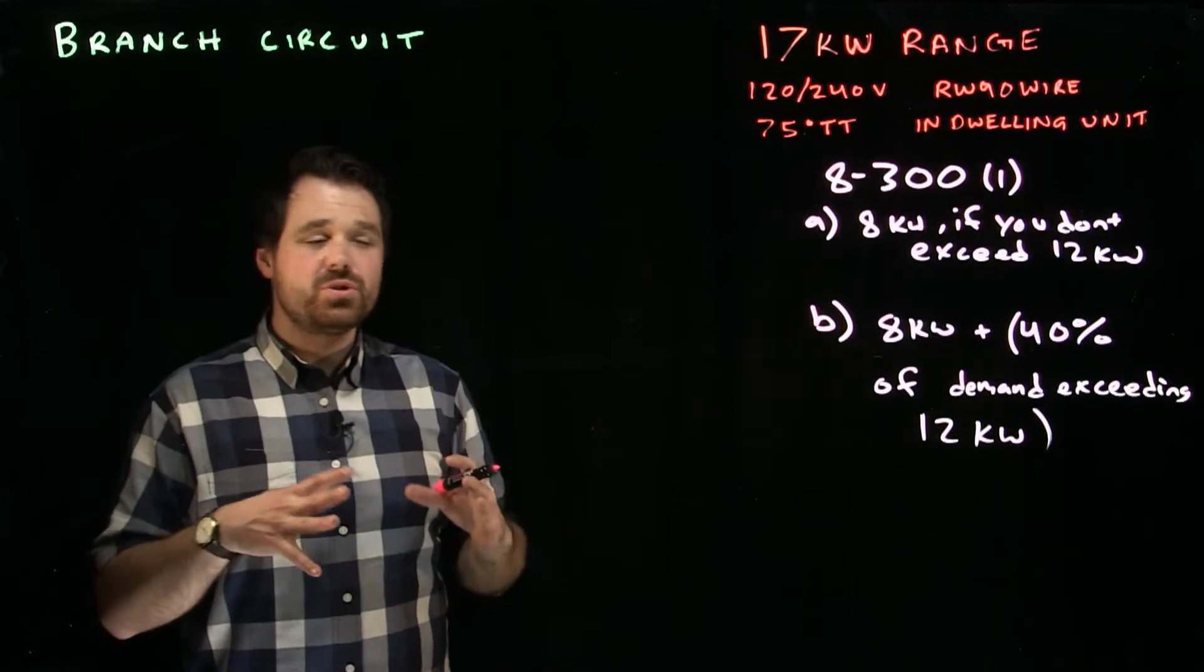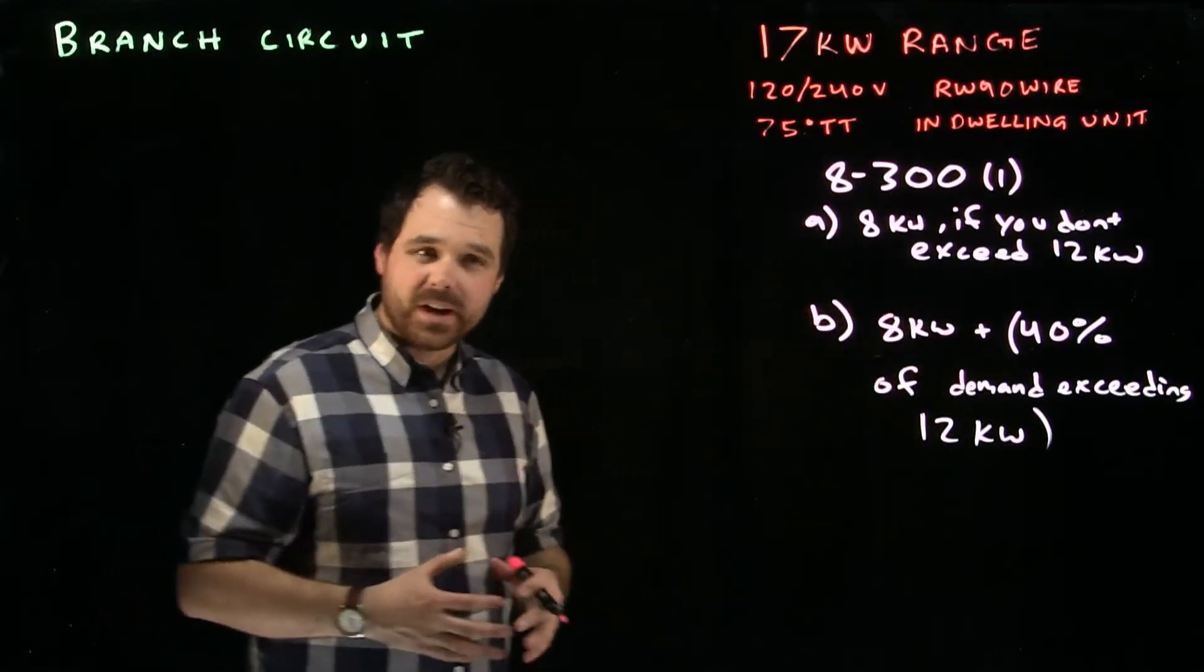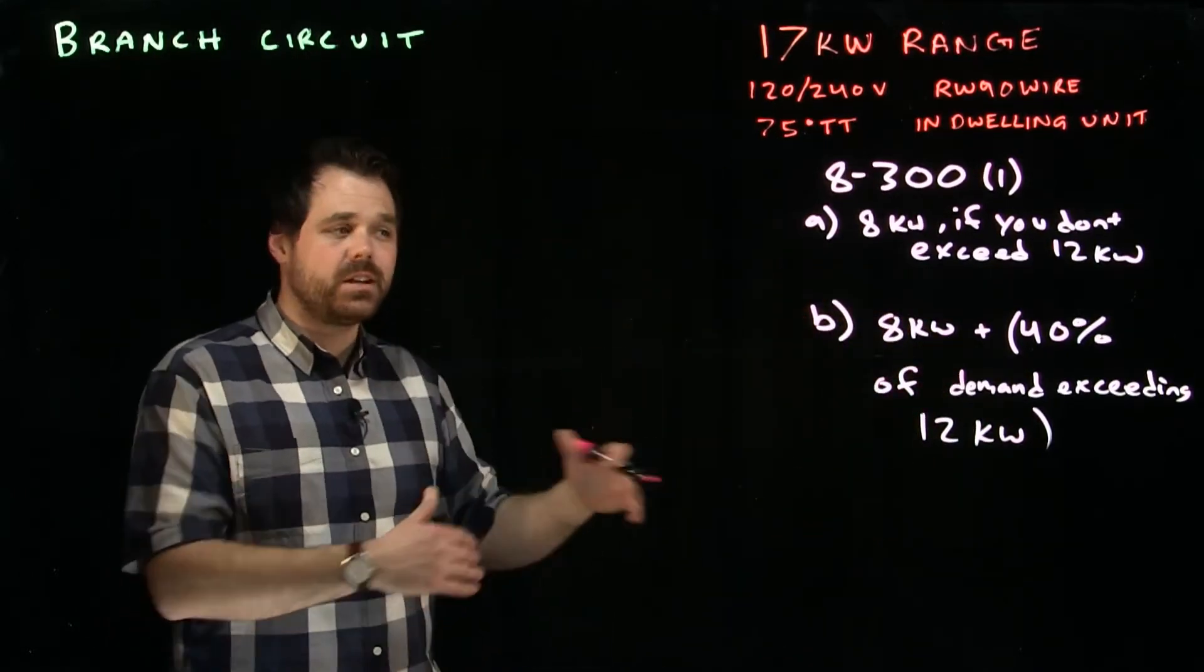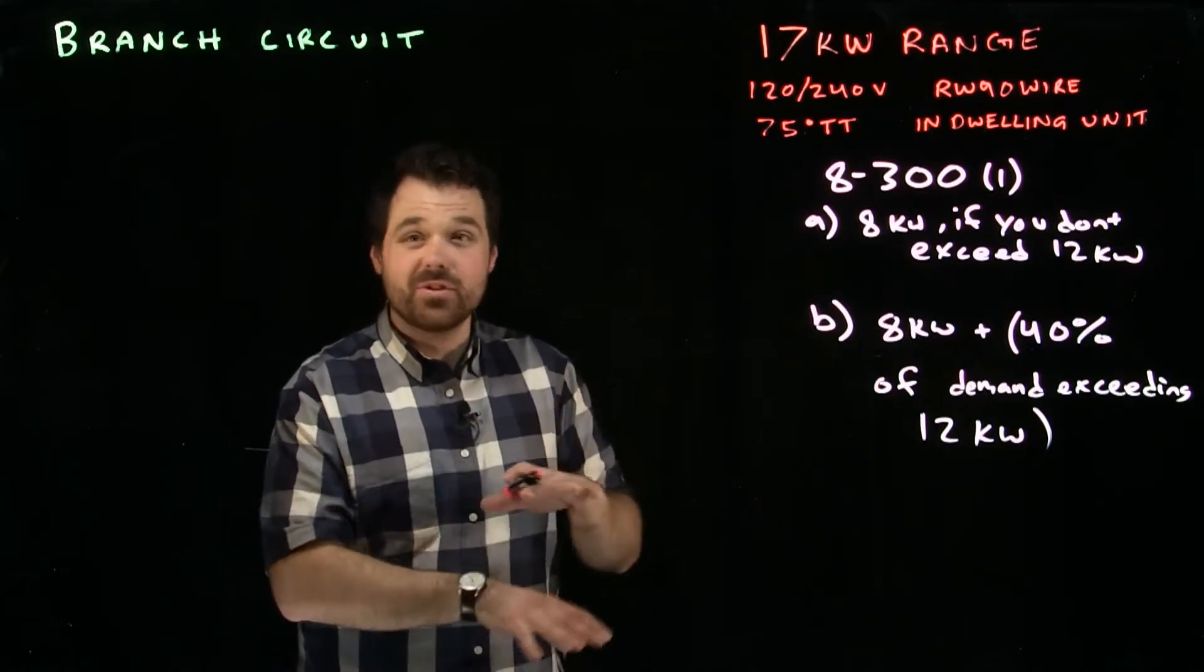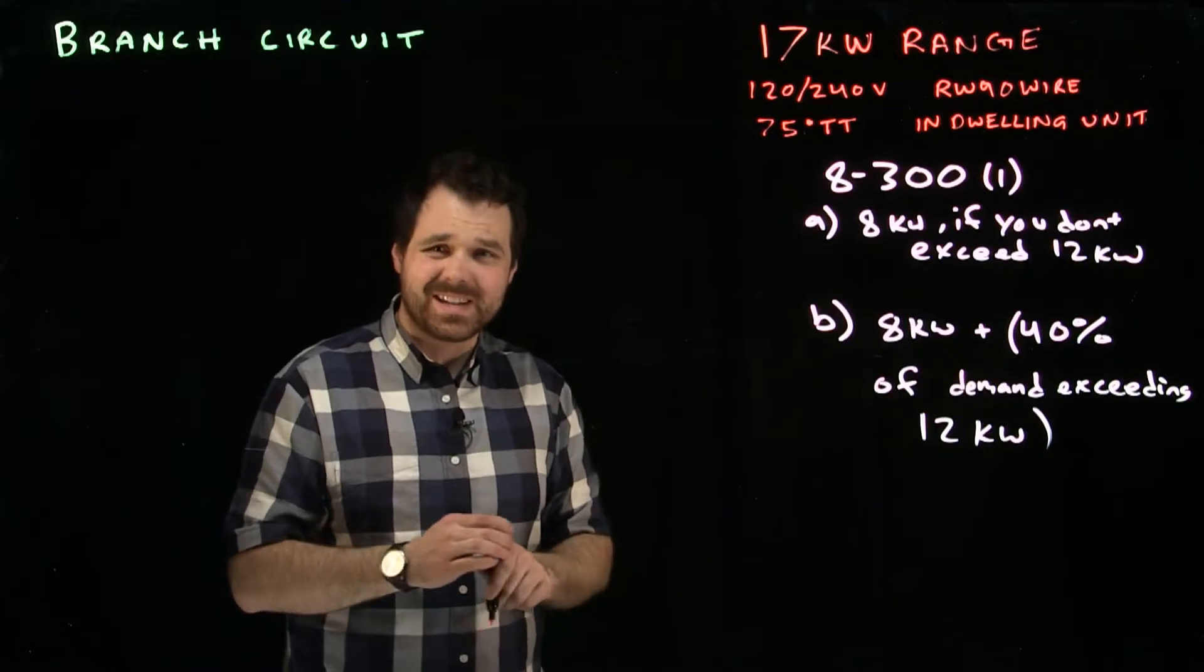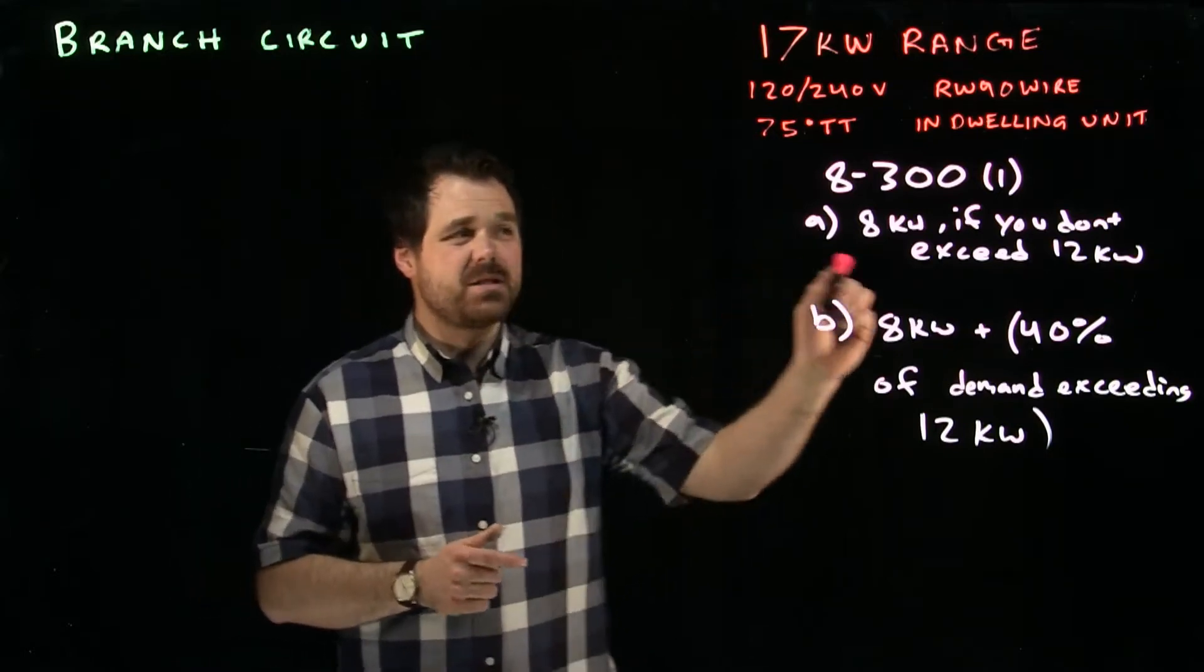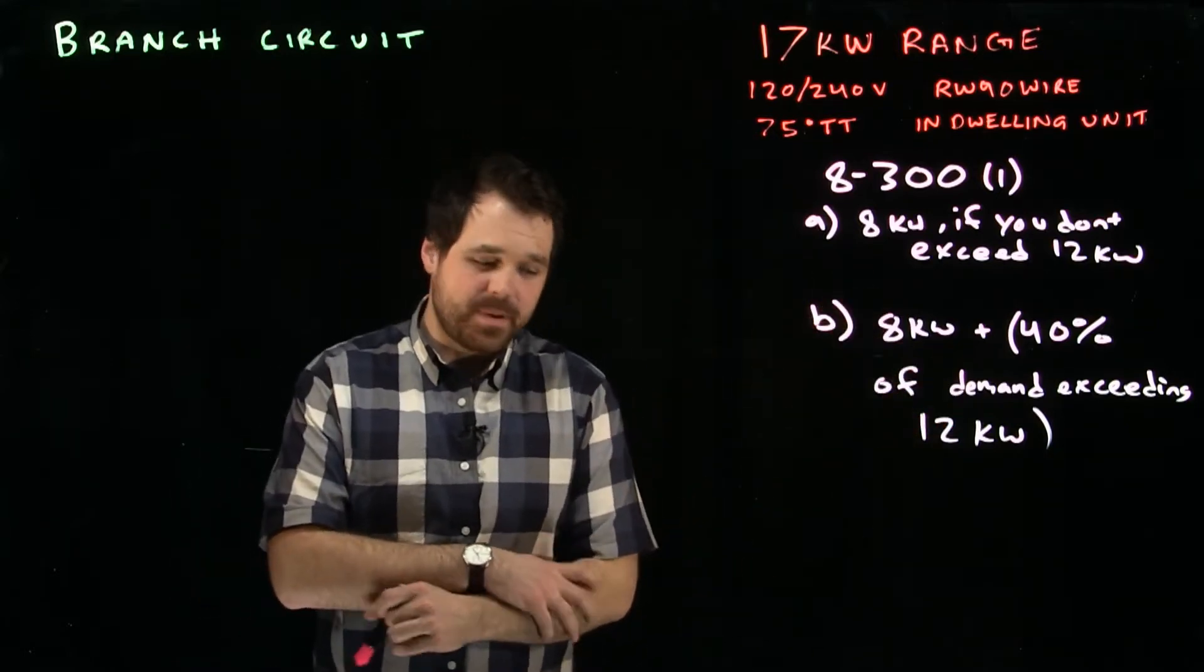So the code book allows us to apply demand factors to a range because with a range, they're rated in what they would use if everything was on. But with ranges, we know that not all four burners and everything inside the range is all going to be on at the same time. So we get to apply a demand factor and size our wire based off of that.